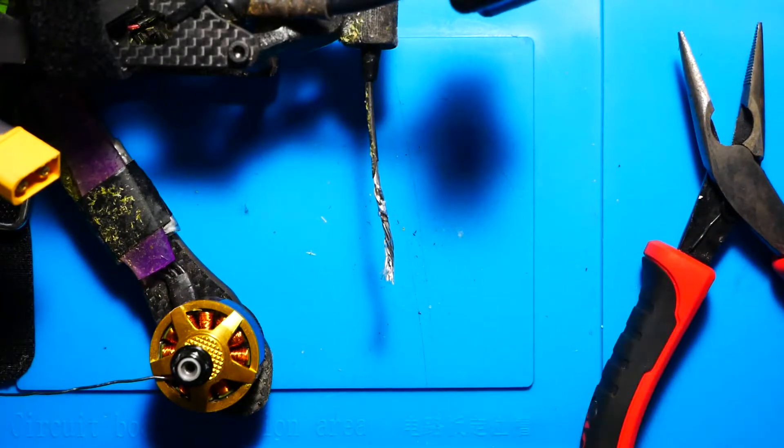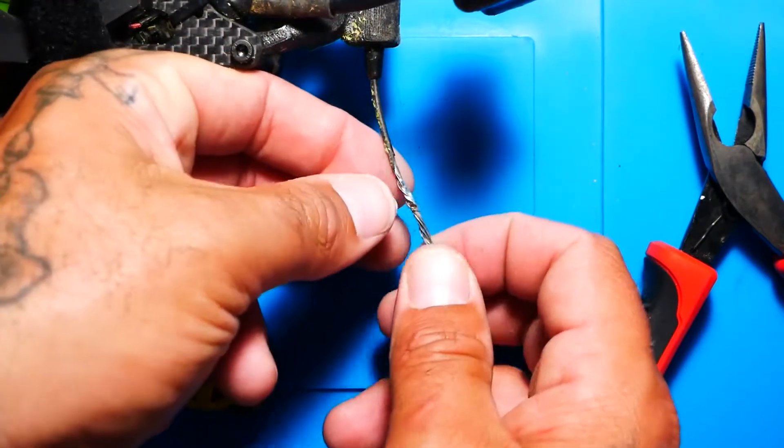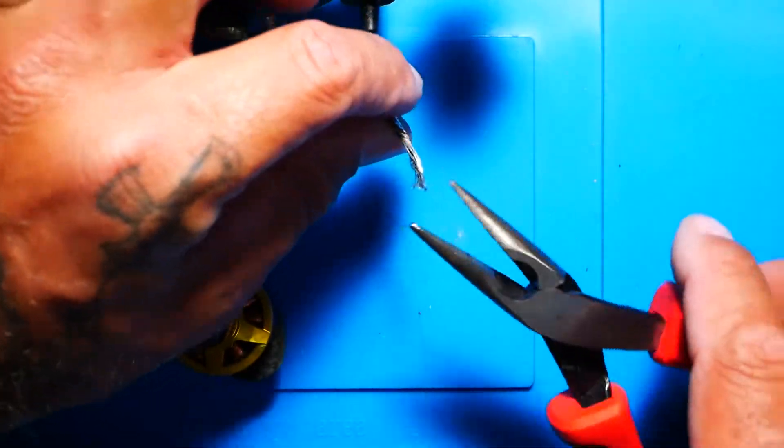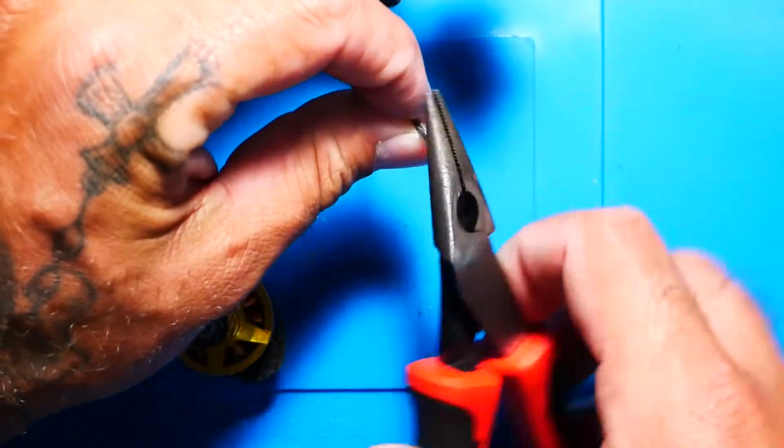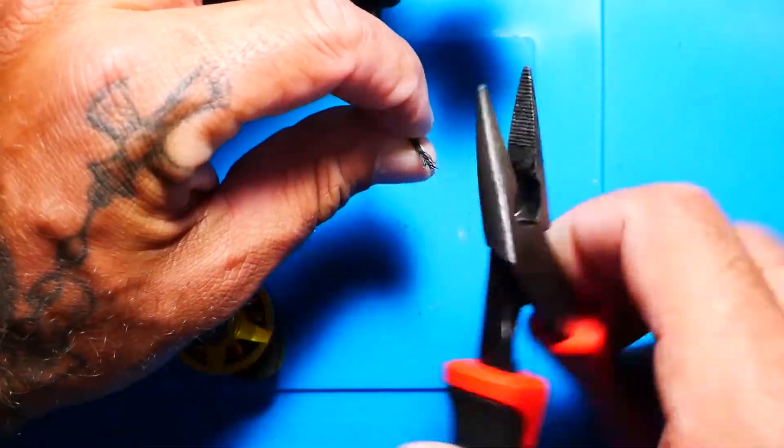If you've got a wet sponge, feel free to use that to cool it back down. Alright, once she's cooled back down, we're going to give another twist or two. Because now the base is being held together for us by the solder.